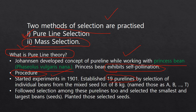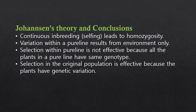He got all the seeds from the shop and segregated them based upon their size and weight. He planted them and obtained 19 pure lines. Smaller seeds gave rise to smaller plants and larger seeds gave rise to larger plants. He then followed selection among those pure lines and selected the smallest and the largest beans, and planted those seeds.